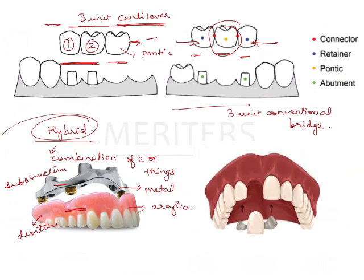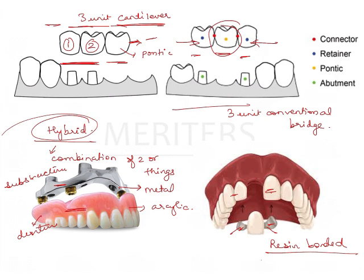As for the Maryland bridge — it has two thin metal retainers with macro-mechanical bonding and is resin-bonded. Maryland bridges are very peculiar in their configuration: small wing-like retainers that cover the adjacency. It could be a cantilever as well — so even a Maryland bridge can be cantilever. If there is only one wing, it becomes a cantilever Maryland bridge.